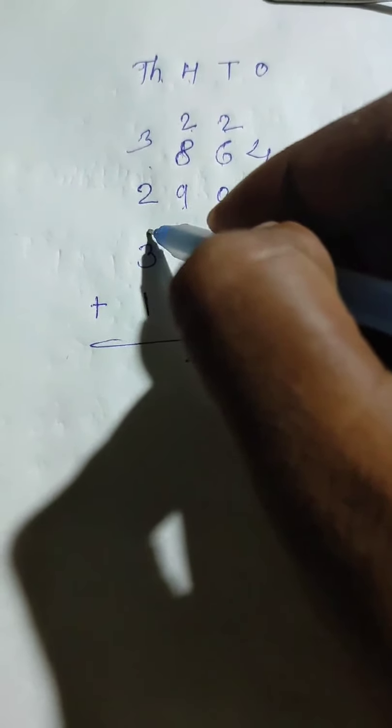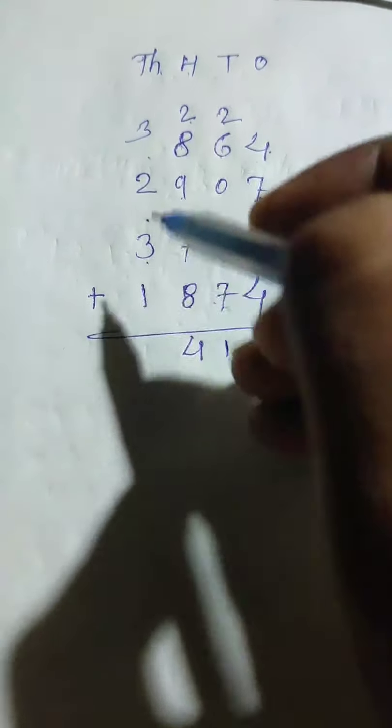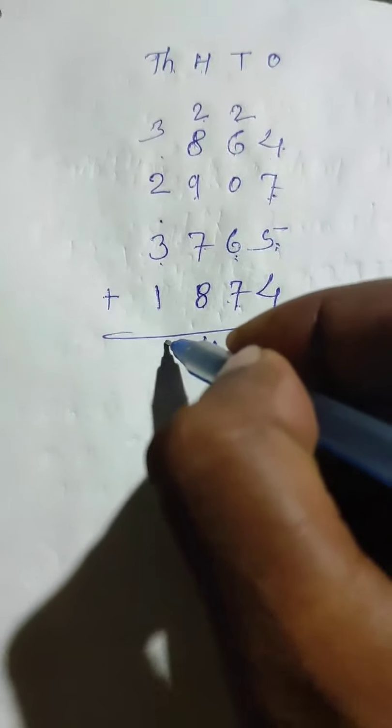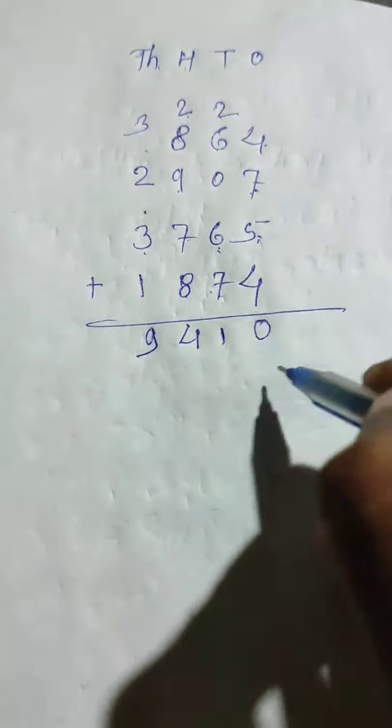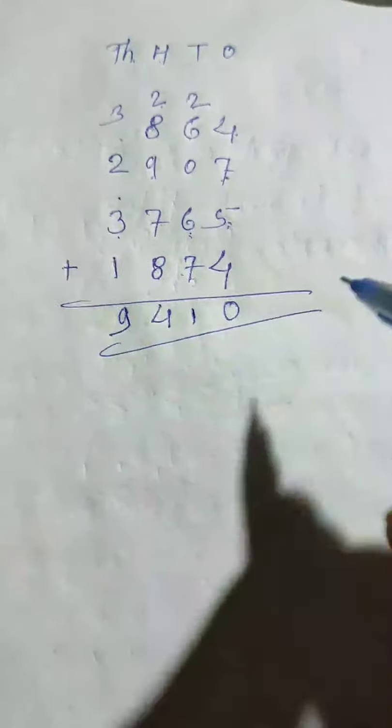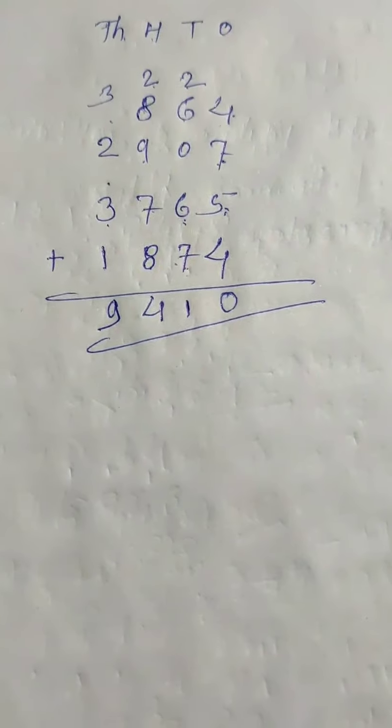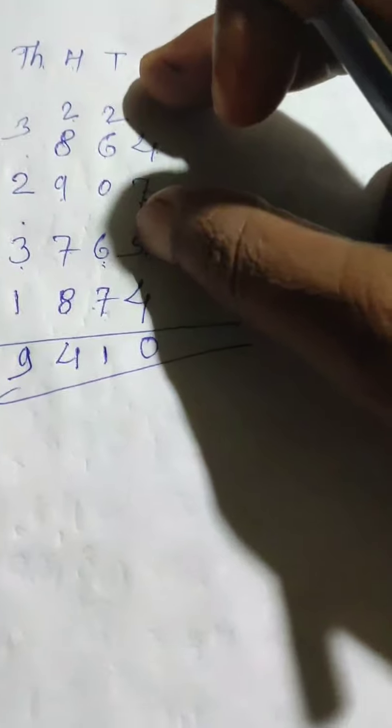Eight plus two is ten, plus nine is nineteen, plus seven is twenty six. Twenty six plus eight is thirty four. Write four and carry three to thousands place. Three plus two is five, five plus three is eight, eight plus one is nine. Answer is nine thousand four hundred ten.